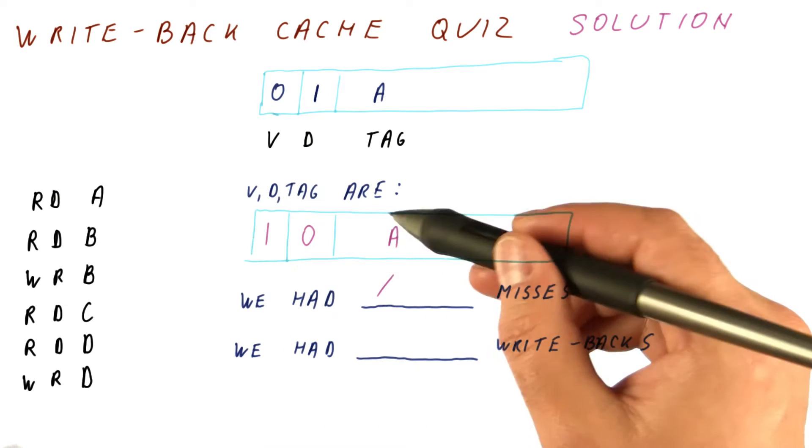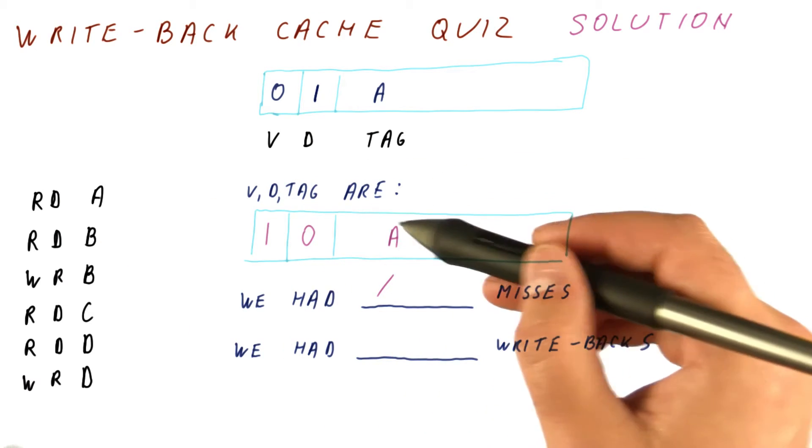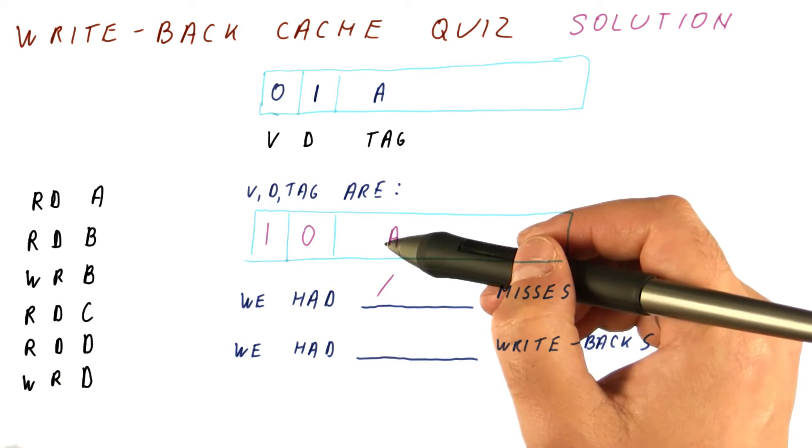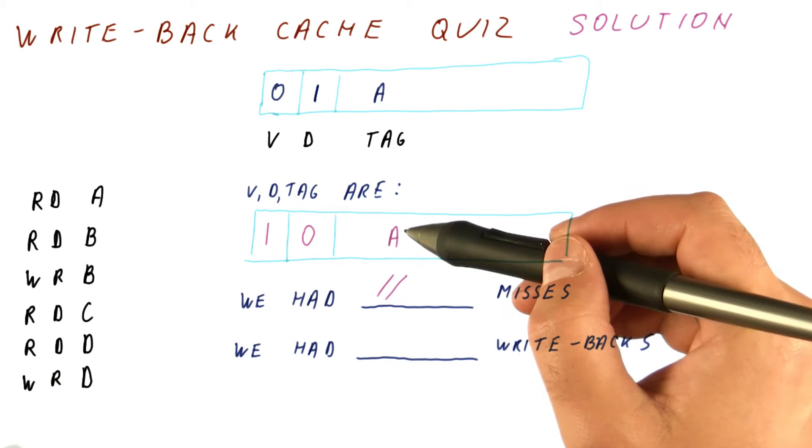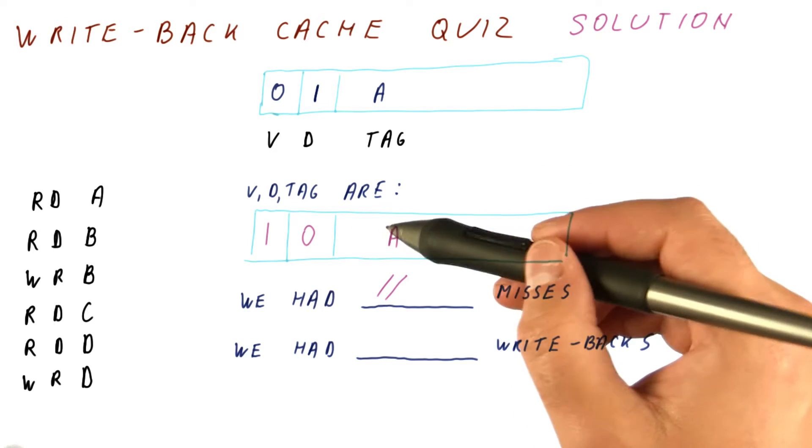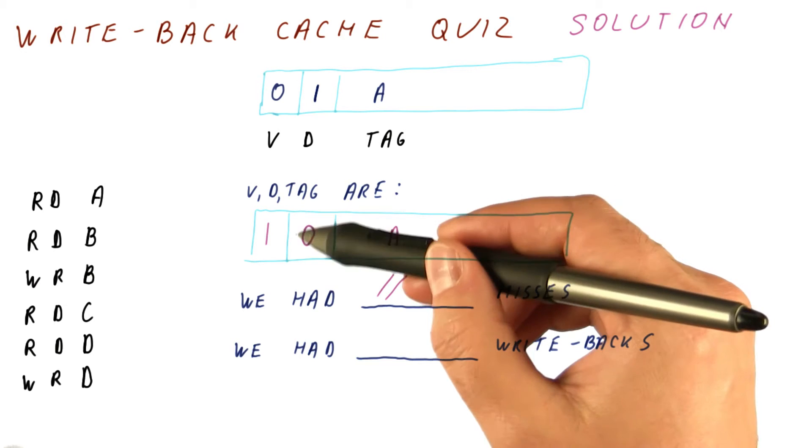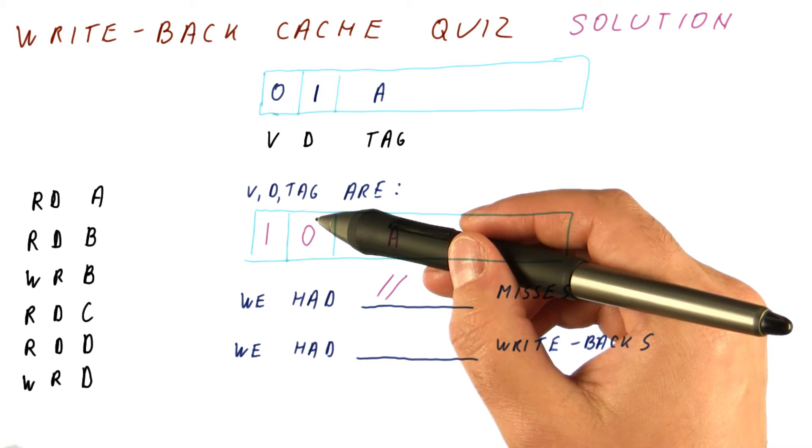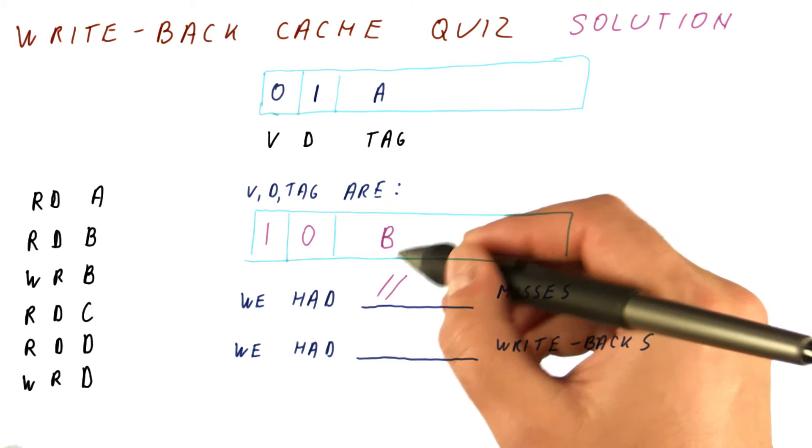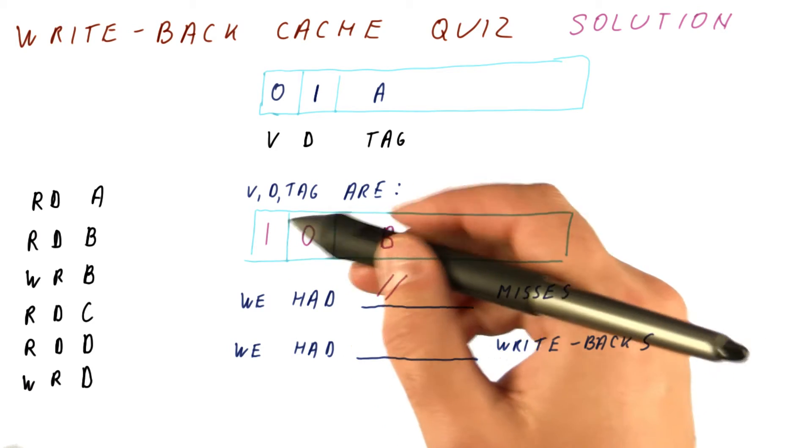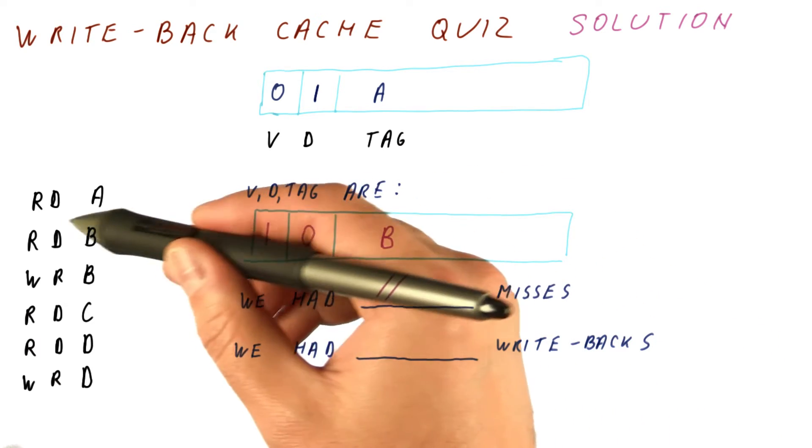Next, we read B. We check the tag and the valid bit. The tag is a mismatch, so this is a miss. We need to kick out A. For that, we check the dirty bit. It's zero, so we don't have a write-back. We replace A with B. The valid bit is one, and the dirty bit is zero because this is a read.